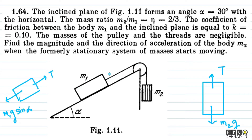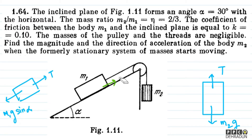We need to check which is greater: m1g·sin(alpha) or m2g? Because the net pulling force depends on this comparison. If m2g is greater, the system tends to move downward, and friction will act down the incline to oppose it. If m1g·sin(alpha) is greater compared to m2g, then friction will act up the incline to oppose the system. So let's calculate which one is larger to determine the friction direction on m1.